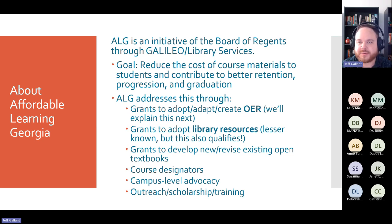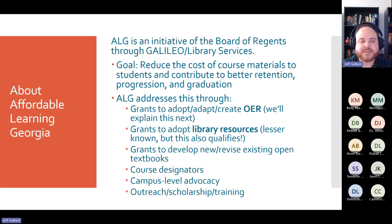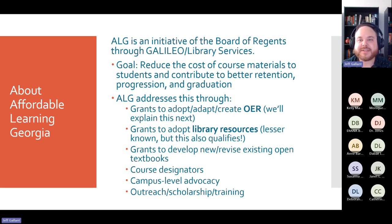We also work with vendor-provided and open web materials. We are now moving into research grants to examine the effects of these initiatives, building on the research that has already come out of many projects. We've implemented course designators for low-cost and no-cost materials in the catalog system-wide. There's campus-level advocacy through our champions at all 26 institutions, plus outreach, training, and scholarship support.